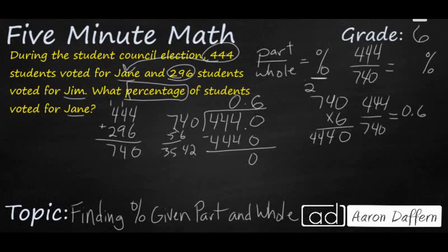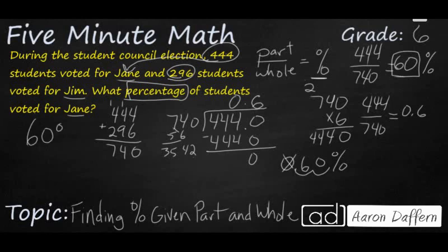And when we want to turn that into a percent, that's pretty simple. Move the decimal over once, twice, to the right. If you have a blank spot you can put a zero, and you have your answer of 60%. So what percentage of students voted for Jane? 60% of the students voted for Jane. Let's look at another example.